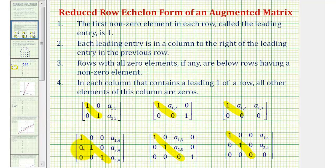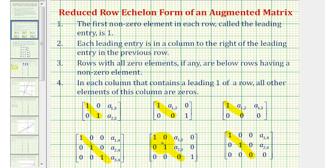Here are several examples of augmented matrices in reduced row echelon form. Notice that if we focus on the main diagonals, highlighted here in yellow, all the main diagonals contain ones or zeros. If they contain a zero, we have either no solution or infinite solutions. Notice how wherever there's a one in a row, all the elements above and below that one are zero.